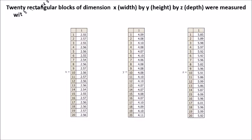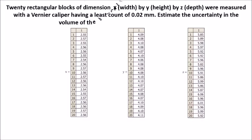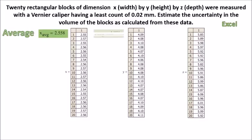Twenty rectangular blocks of dimensions x width by y height by z depth were measured with a Vernier caliper having a least count of 0.02 mm. Estimate the uncertainty in the volume of the blocks as calculated from this data. First, we calculate the average dimension for x, y, and z.